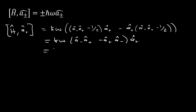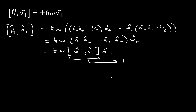Simplifying further, we get h-bar·omega times [a-hat minus, a-hat plus] times a-hat plus. From an identity in the book, we know that [a-hat minus, a-hat plus] equals one — note that [a-hat plus, a-hat minus] would be negative one, but this ordering gives positive one. So this simplifies to h-bar·omega times a-hat plus. The raising operator case is done.